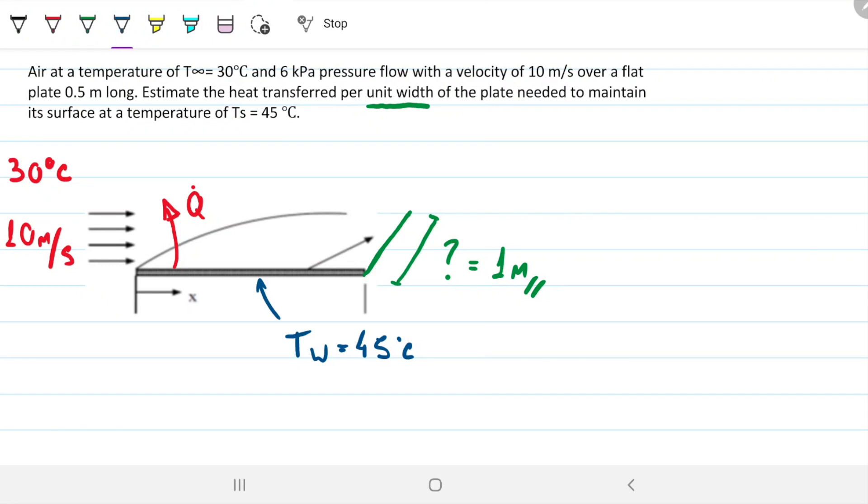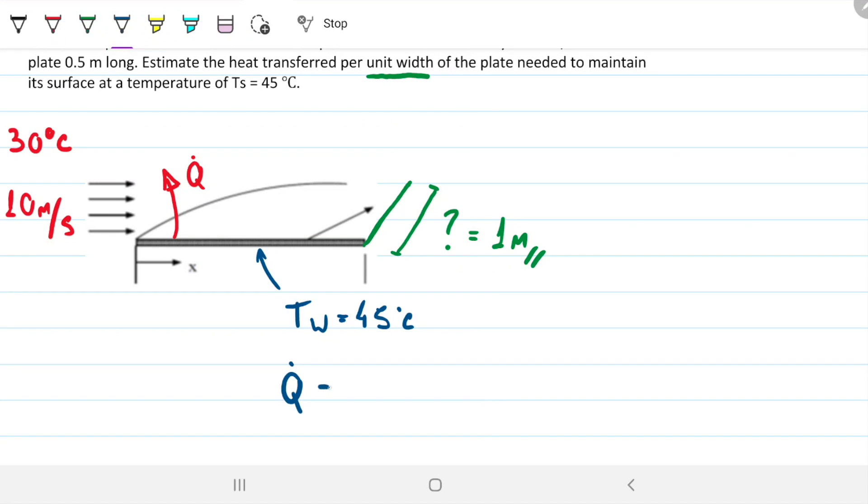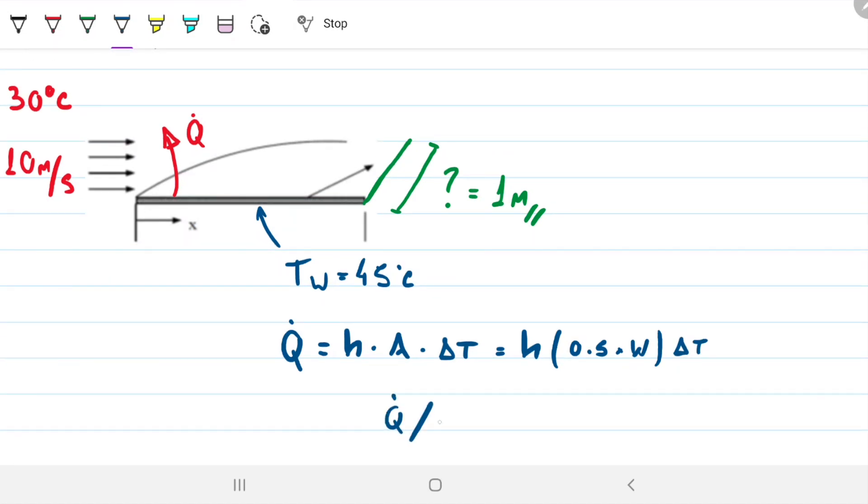We know Newton's law of cooling, which states that the heat transfer will be equal to the convective coefficient, the area, and the delta T. What we're going to do is break our area into the 0.5 meter length times the width. We don't know the width, so just leave it as W, and then delta T. So what we're calculating is Q over W, which is just h times the length, 0.5, times the delta T.